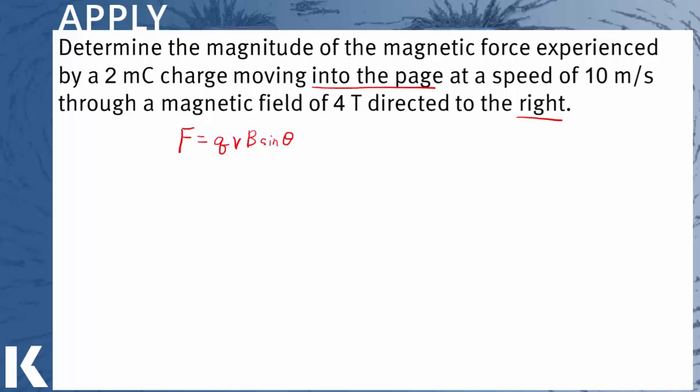We'll use our equation qvB sin θ. We'll plug in the values given, remembering to convert millicoulombs to coulombs, 10 to the minus 3, and then we'll solve. Sin of 90 is 1. That leaves 2 times 4 gives us 8 as our mantissa, or the number out front of the power of 10. And then 10 to the minus 3 times 10 gives me 10 to the minus 2. Or you can plug directly into your calculator and get a final result of 0.08 newtons.